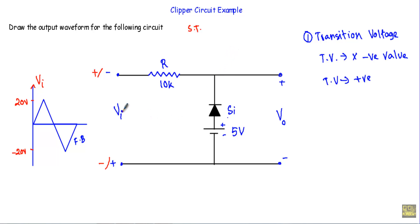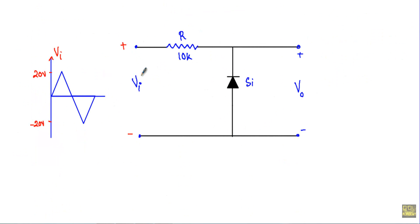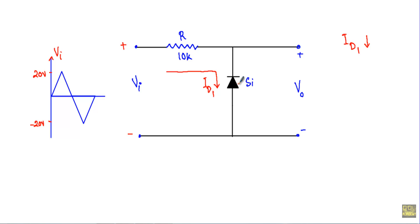First, I will consider the effect of the input voltage alone, replacing the bias voltage source with a short circuit. During the positive half cycle, this input voltage will try to flow the current — let's call it Id1 — in the downward direction through the diode. I say 'try' because when the diode is in reverse bias there will be no current, so the input voltage is only attempting to conduct current in that direction.